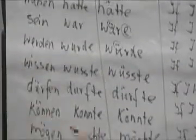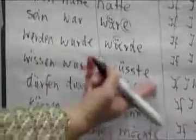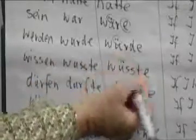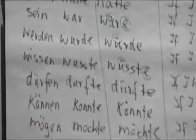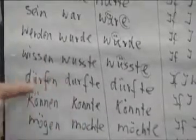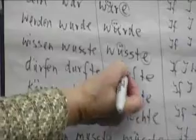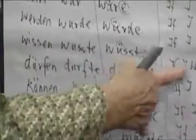Wissen, to know, past tense is wusste, subjunctive adds an umlaut, personal endings, if I knew. Dürfen is to be allowed to, past tense is durfte, was allowed to, subjunctive is dürfte, umlaut, if I were allowed.